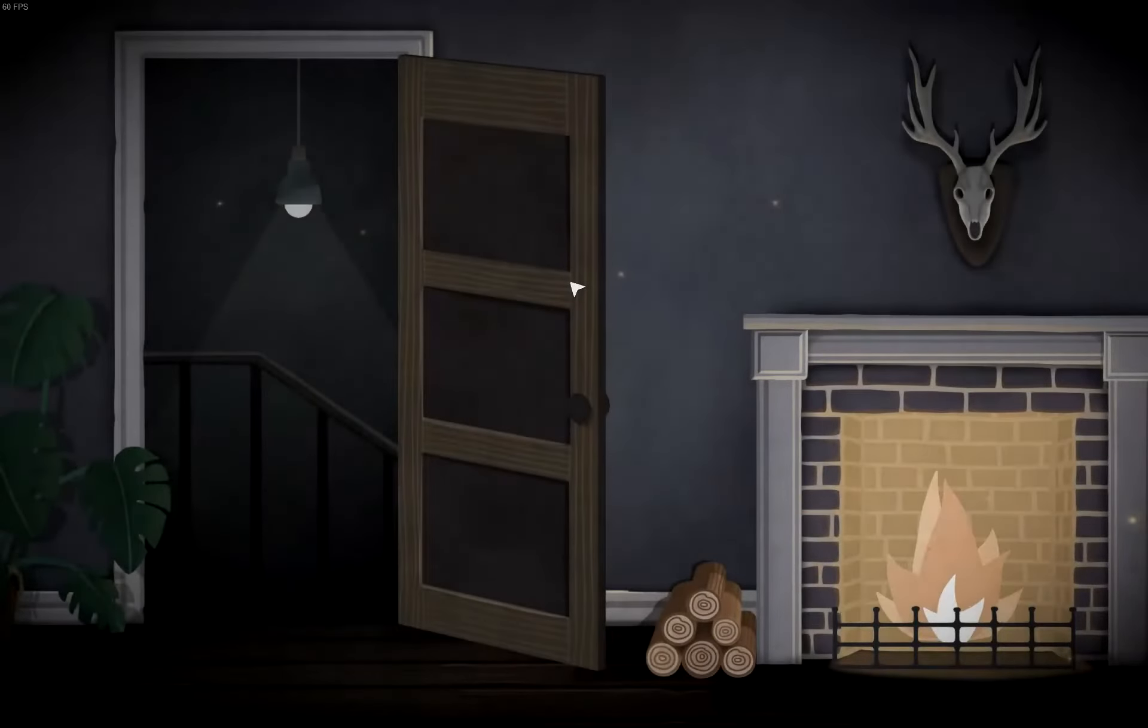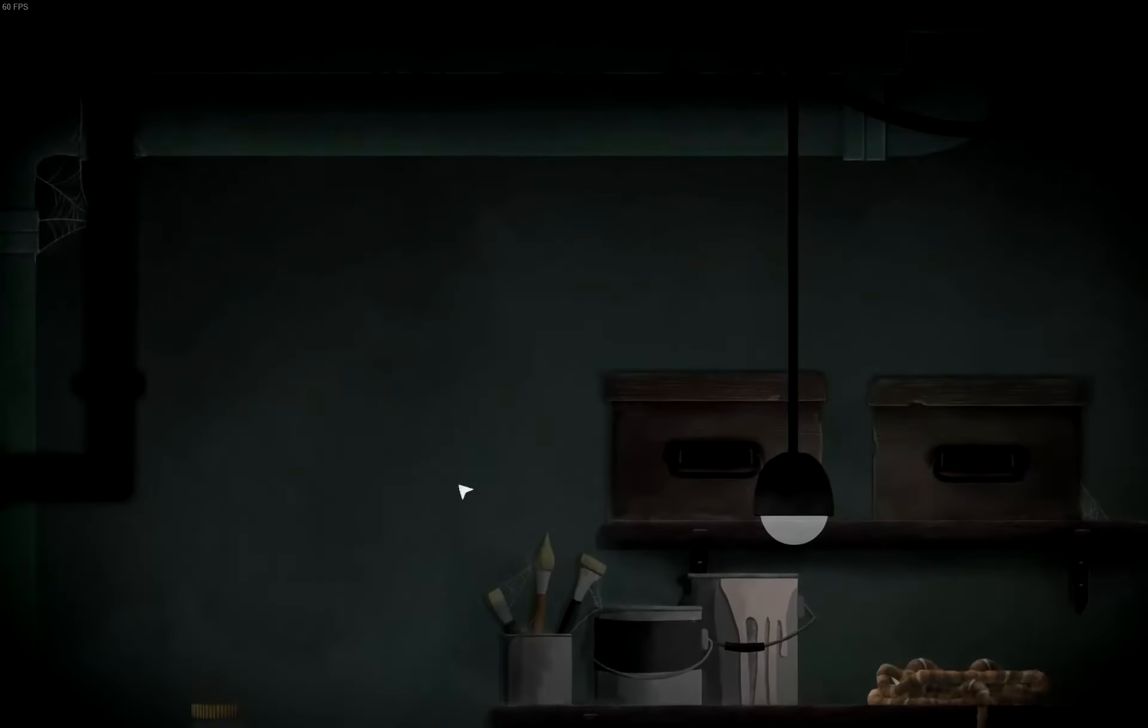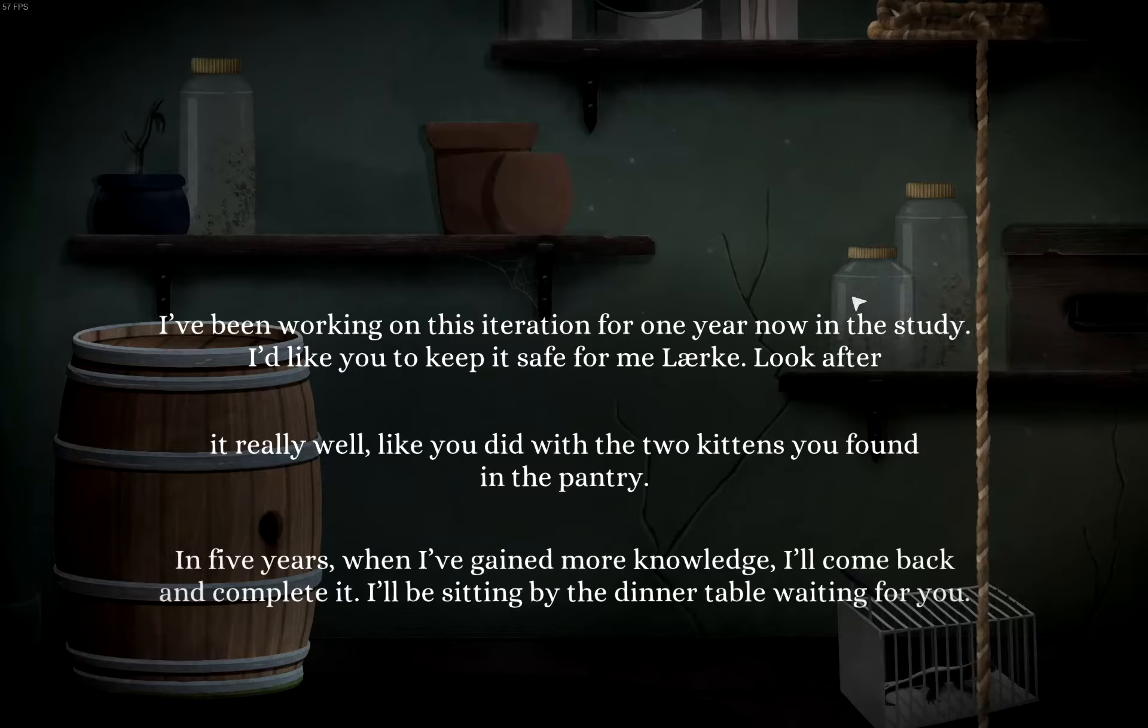I'm going to go back in the house, because I'm pretty sure that's the solution here. So I've been working on this iteration for one year in the study. I'd like you to keep it safe for me, like you did with the two kittens you found in the pantry. In five years, when I've gained more knowledge, I'll come back and complete it. I'll be sitting at the dining table waiting for you. You get it now? Study once, kitchen twice, dining hall five.